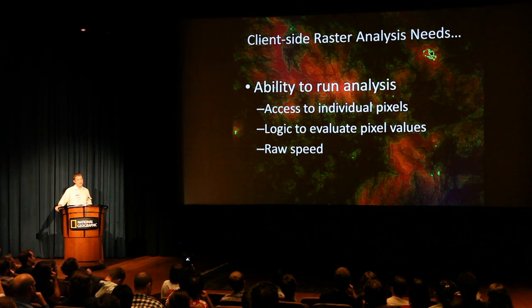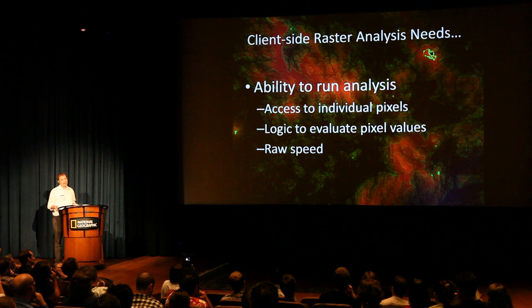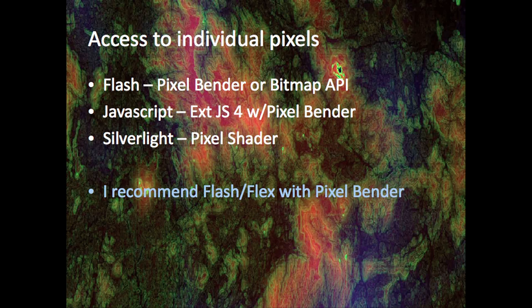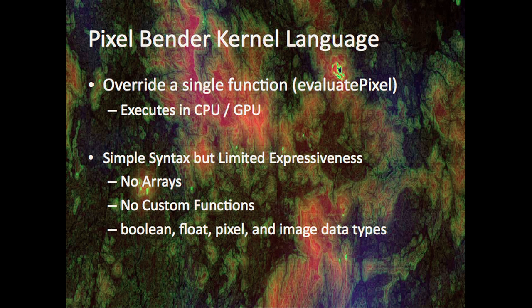But that's not all you need — that's just the source data. You still need to do analysis on it. You need access to individual pixels on the client, logic to execute on those pixels once they're there, and a ton of speed. If you're going to process a megapixel, that's a million pixels. I use PixelBender with Flash to do this analysis — you write these little kernels. Browser plugins are still dominating in this area; I don't really see JavaScript looping over 50 million pixels at a time.